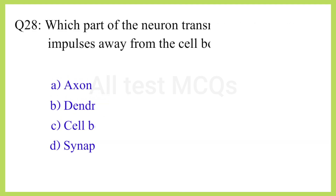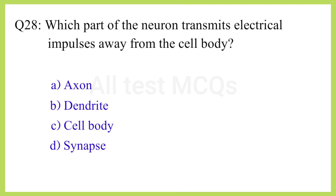Q28. Which part of the neuron transmits electrical impulses away from the cell body? The correct answer is option A: Axon.